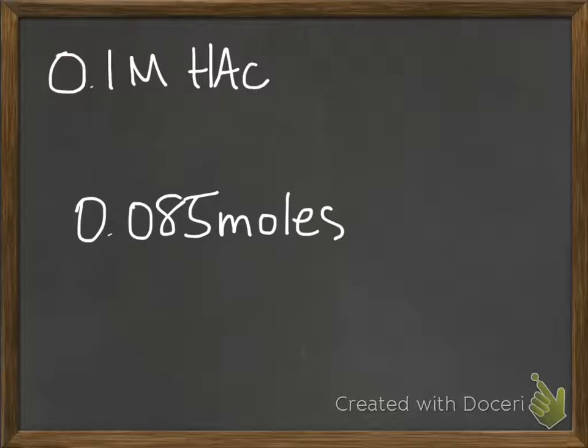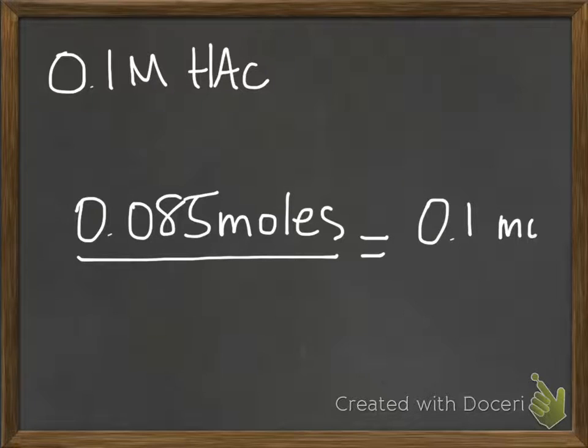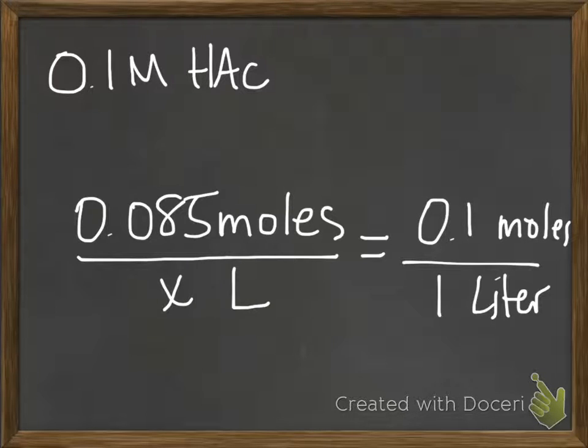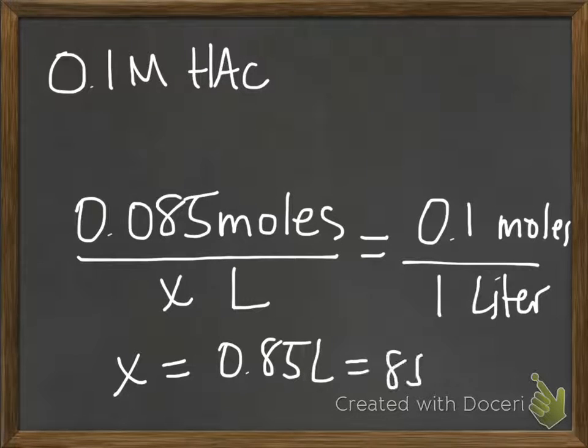So if 0.085 moles is what you want and you're starting off with 0.1 moles in 1 liter, you solve for x in this equation. And you get 0.85 liters or 850 mils.